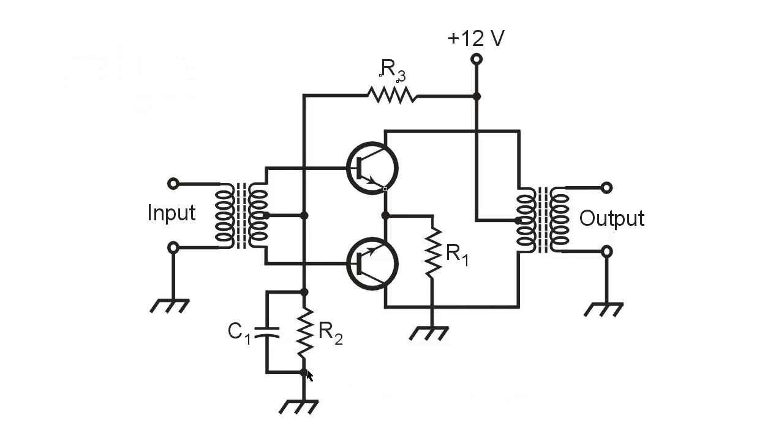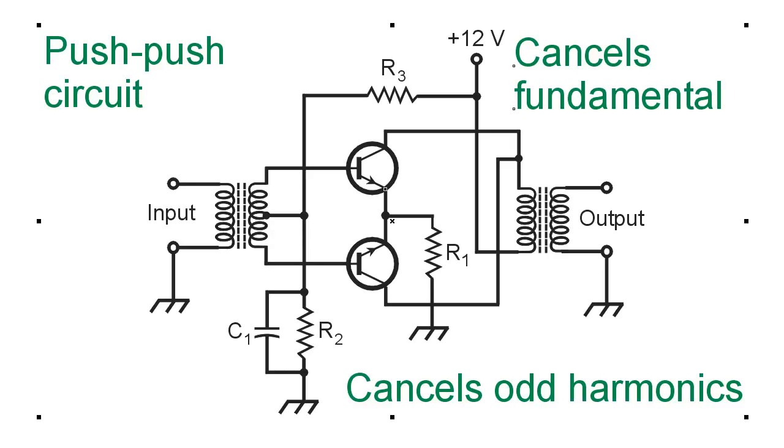So let's take that circuit away now and replace it with something just about the same but radically different. In terms of its behavior, it is called a push-push circuit. It is identical to the push-pull in every respect except one. Notice that the collectors of the transistors, instead of going to opposite ends of the transformer, now go to the same end of the transformer.